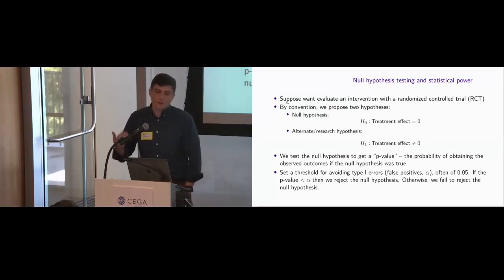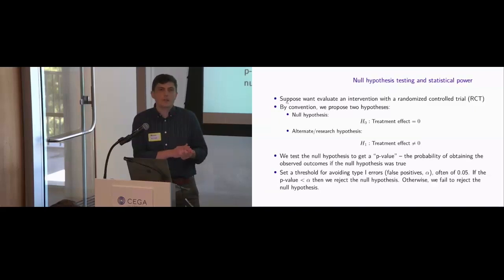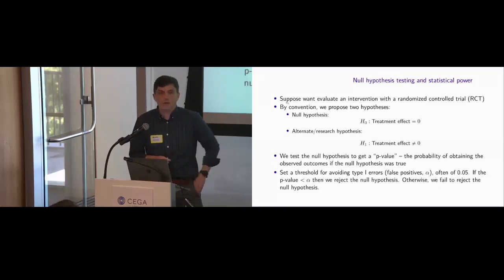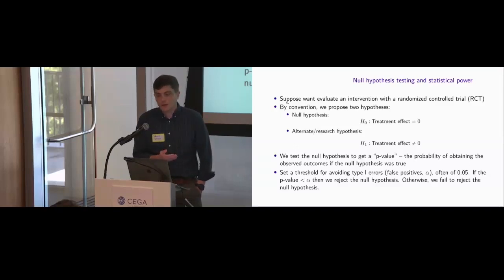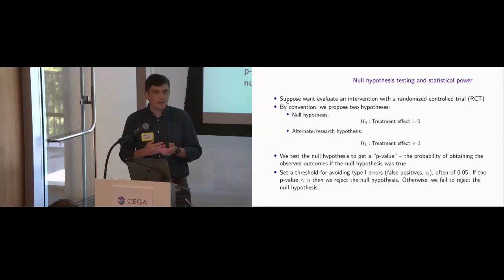We run our calculations and test the null hypothesis to get a p-value — the probability of obtaining the observed outcomes if the null hypothesis were true. We set a threshold for statistical inference: we choose an alpha value, typically 0.05. If the p-value is less than this critical value, we reject the null hypothesis; otherwise, we fail to reject it. Failing to reject doesn't give us a lot of information — is it because the true effect is zero, or because we were weakly powered?